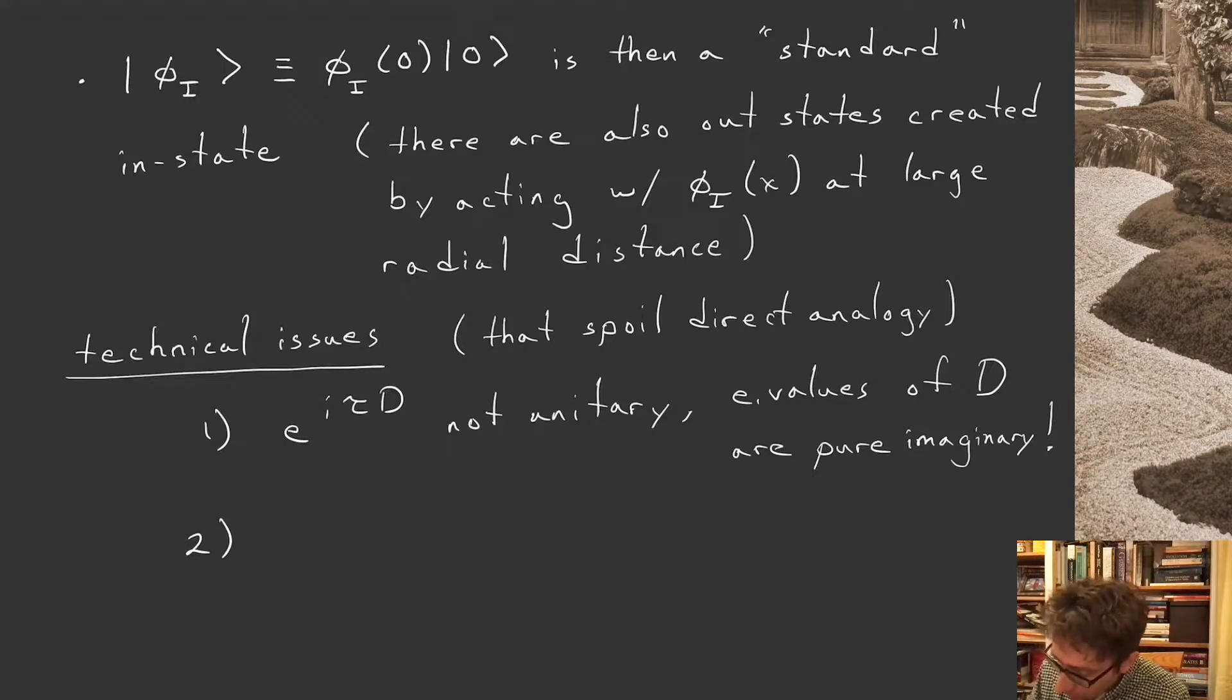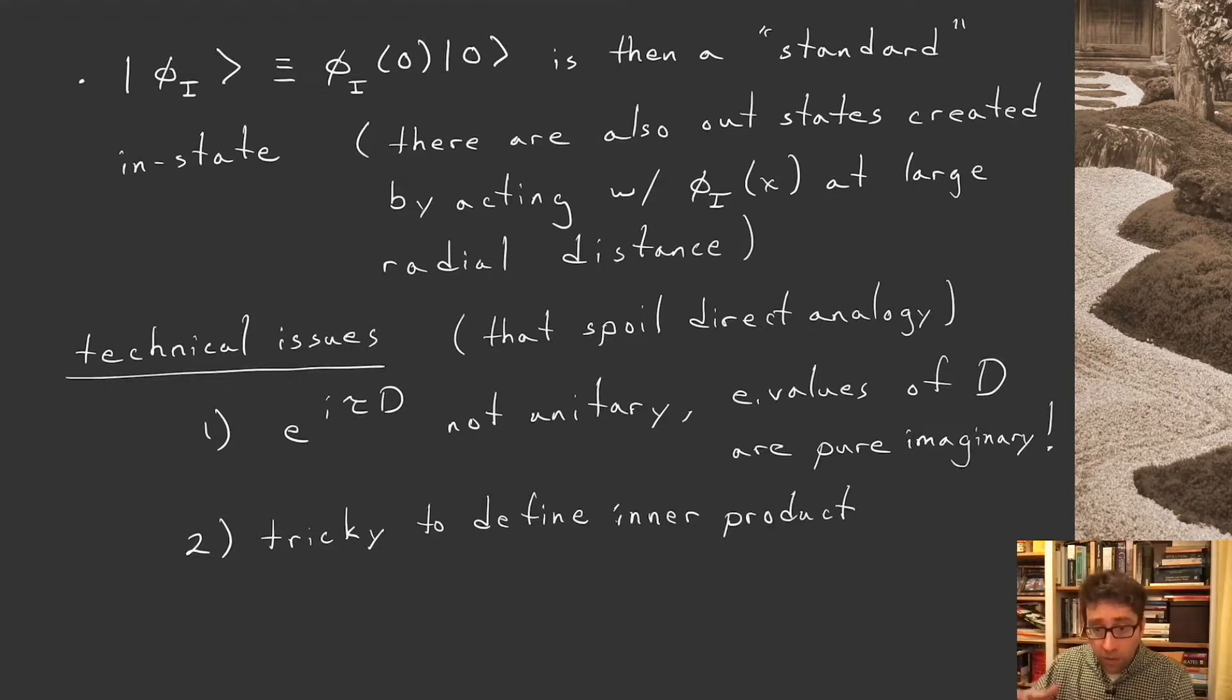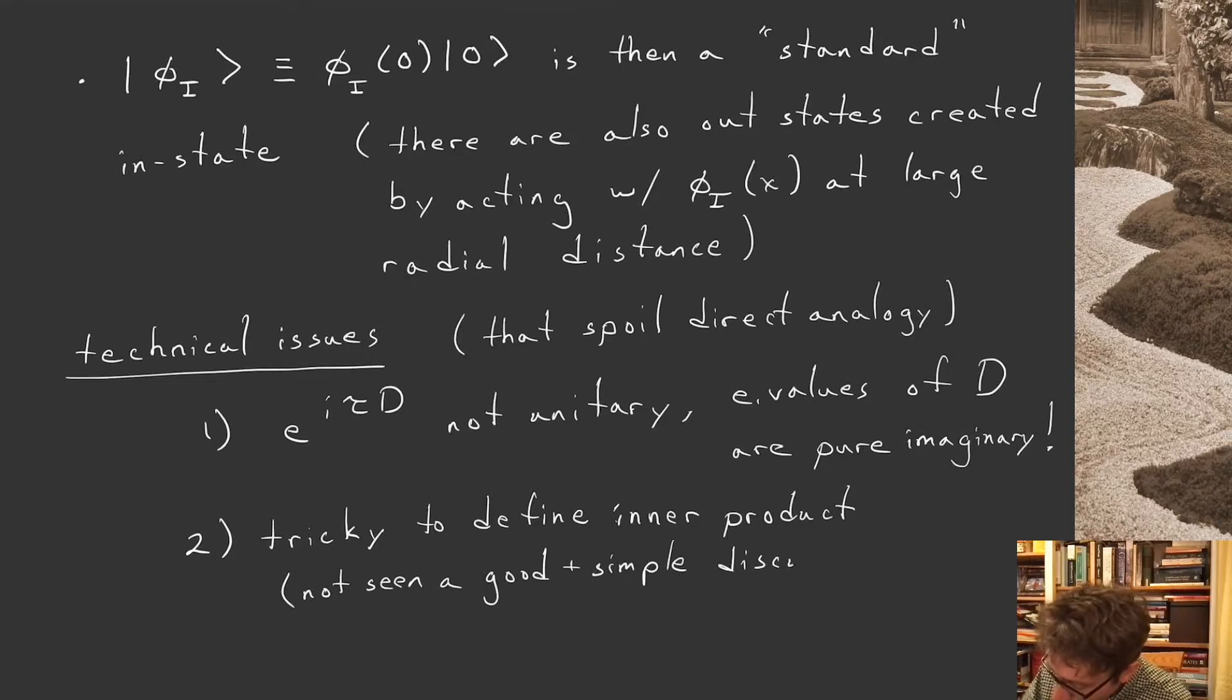Another issue which is closely related is that it's rather tricky to define an inner product in conformal field theory with this notion of radial quantization. And I have to say that I have not seen a good and simple discussion of these issues. I have seen many discussions, but there are none that I find particularly to my liking. And so I have trouble recommending one to you. We'll come back to these issues next week when we talk about the bootstrap and this further notion of unitary bounds or reflection positivity bounds, where I'll have to do a slightly better job in discussing an inner product. But let me just say now that this is a slightly subtle issue, putting the bra state with your ket in conformal field theory.